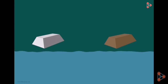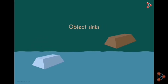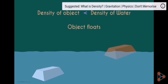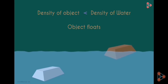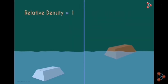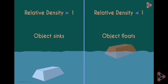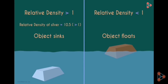It tells us whether the object will float or sink in water. A substance will sink if it's denser than the liquid it's placed in, and it will float if it's less dense. Mathematically, if the relative density of a substance is greater than 1, it will sink; if it's less than 1, it will float. As the relative density of silver is 10.5, which is greater than 1, it will sink in water.